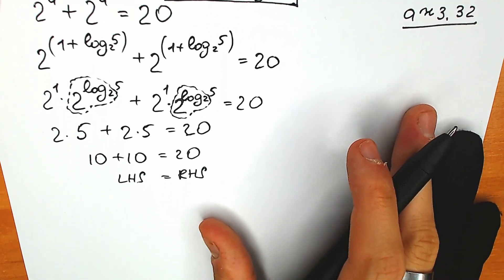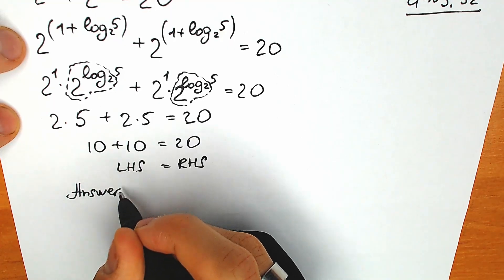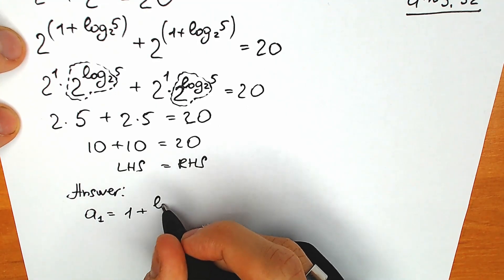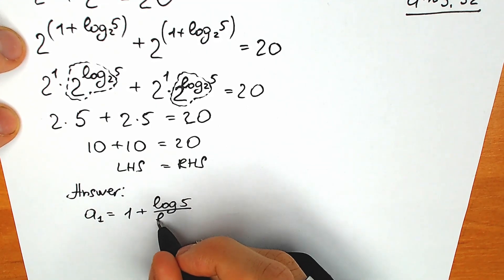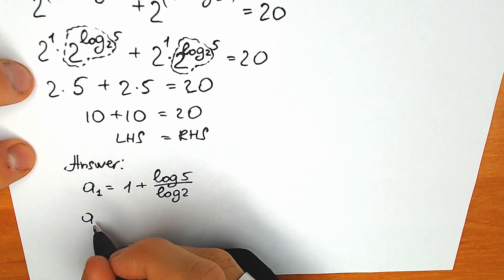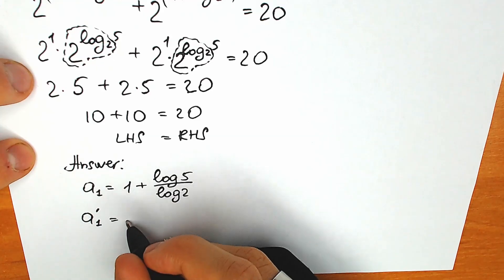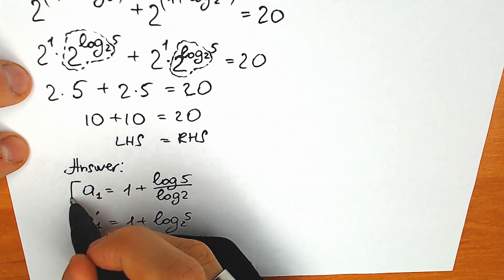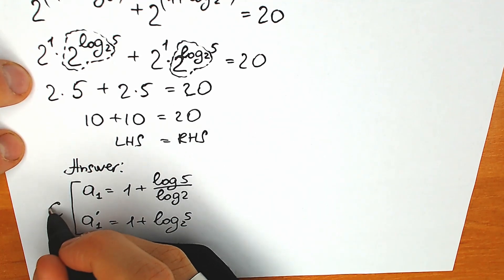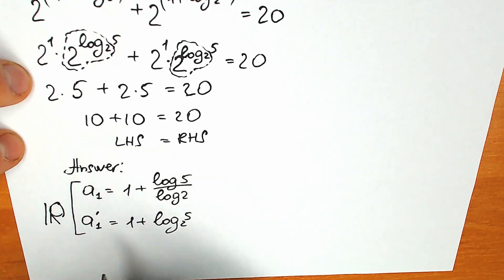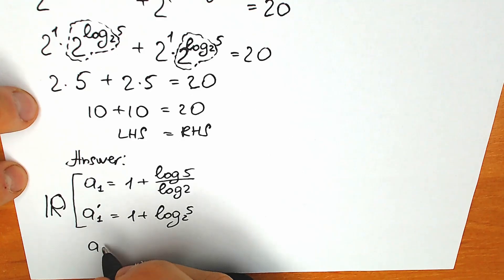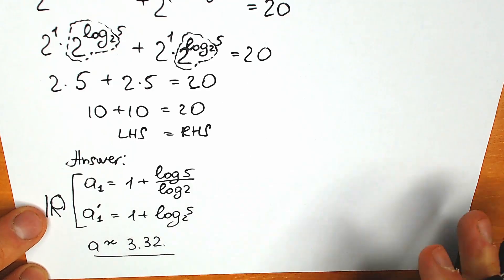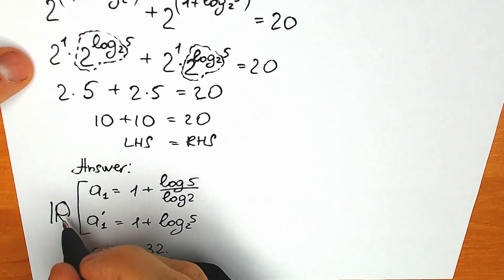So I just want to write our final answer in two variations. Our answer: a₁ equal to 1 plus log 5 over log 2, and equivalently a₁′ equal to 1 plus log 5 base of 2. These are absolutely the same answers — according to log properties we can use both. And a approximately equal to 3.32 if you plug it into a calculator.